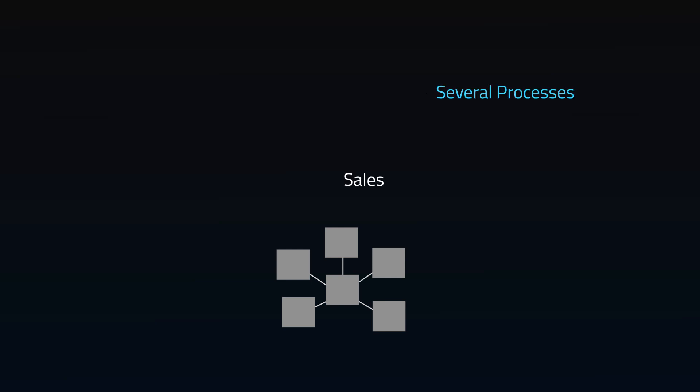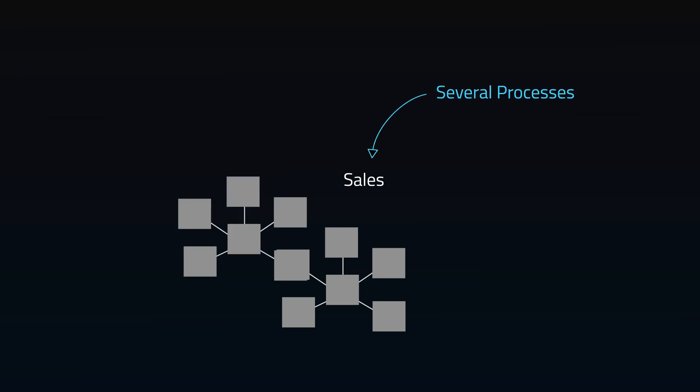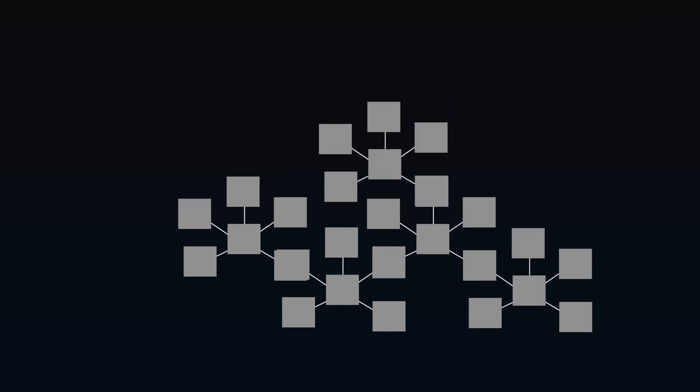A group of processes — let's say sales — will have a few star schemas. This is a second level data mart. An entire organization's data marts combined creates the data warehouse.